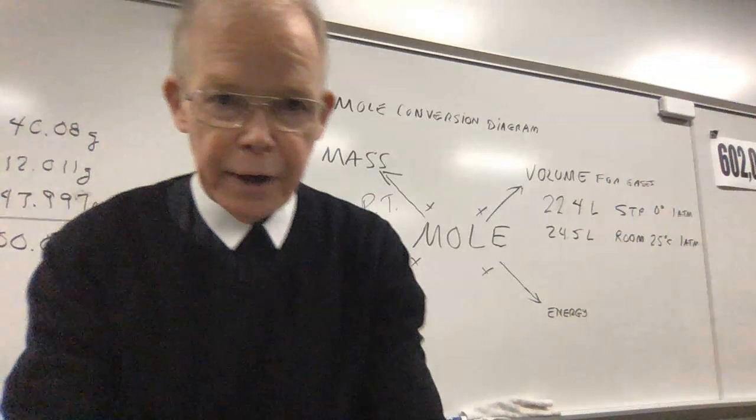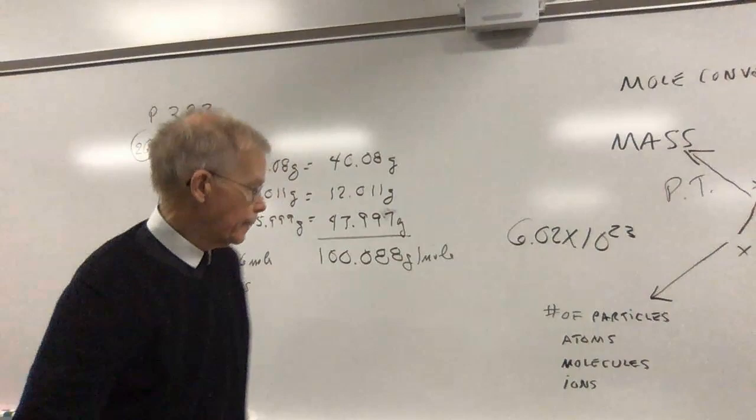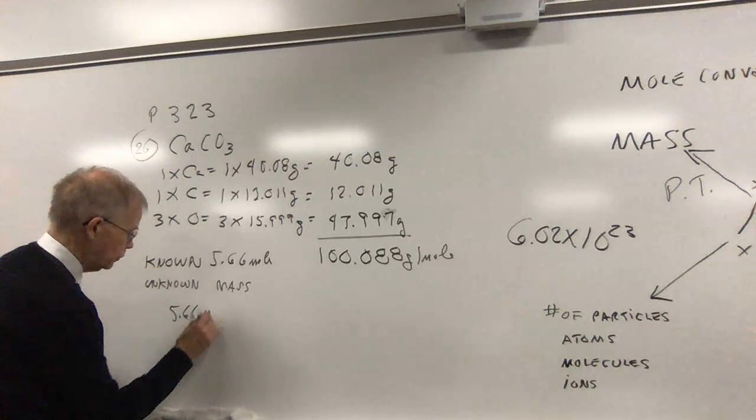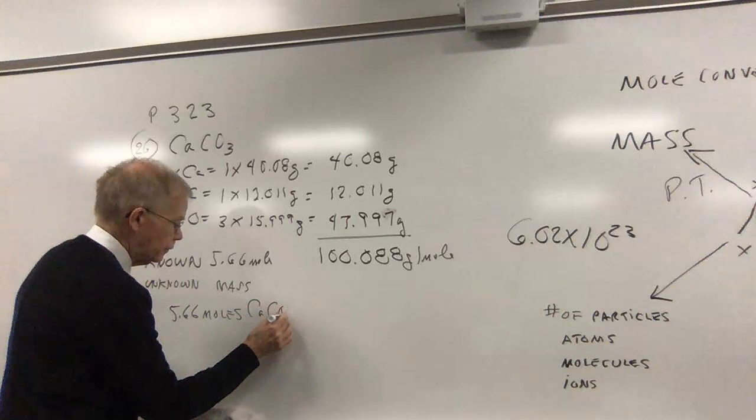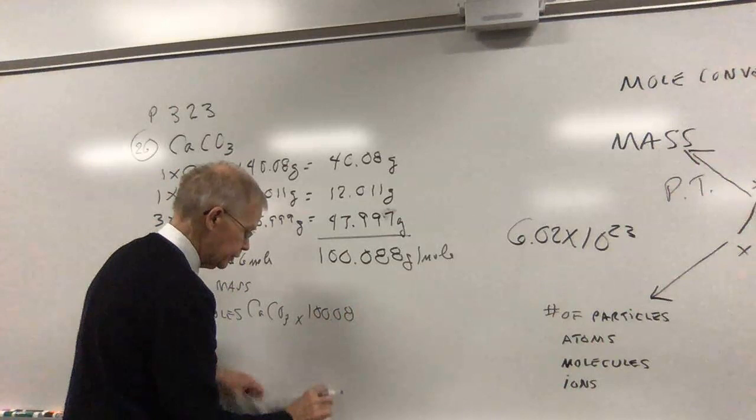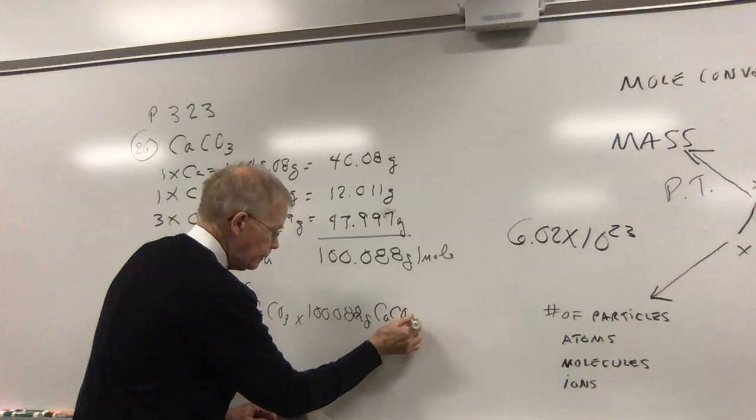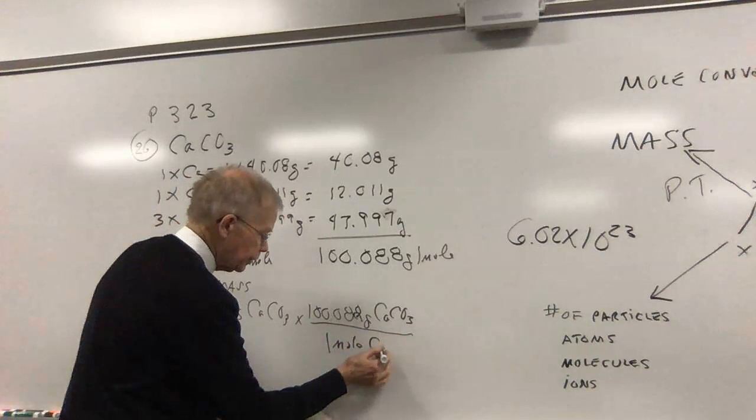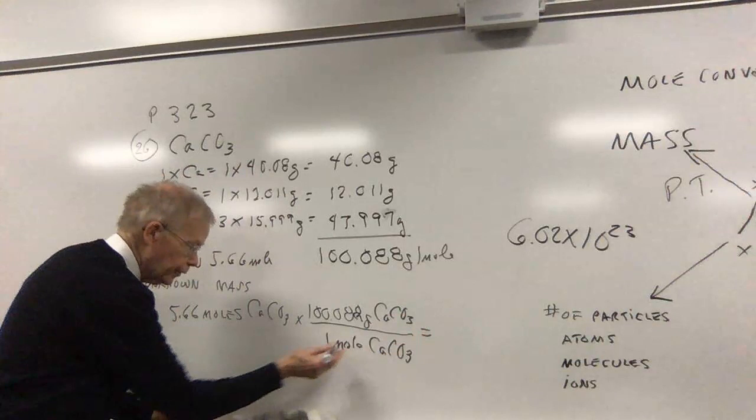So I'll set up my factor label problem, and it'll look like this: 5.66 moles CaCO3. I'll multiply that by the mass I figured out, 100.088 grams CaCO3. And this is per one mole of CaCO3.